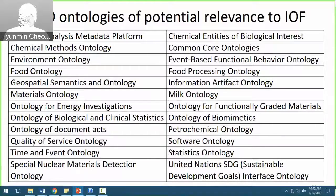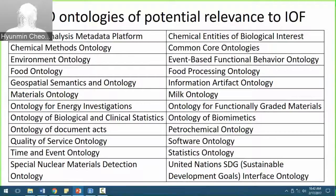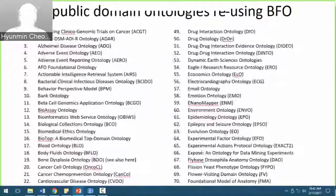I'm curious about a specific example where industry from two different domains was able to share data by linking their ontologies to BFO. When you discover a new gene or gene product — a protein, for instance — you have three questions: where in the cell do I find it? What kind of molecular function is it involved in? And what kinds of biological processes happen downstream? The Gene Ontology has terms for these three kinds of information.